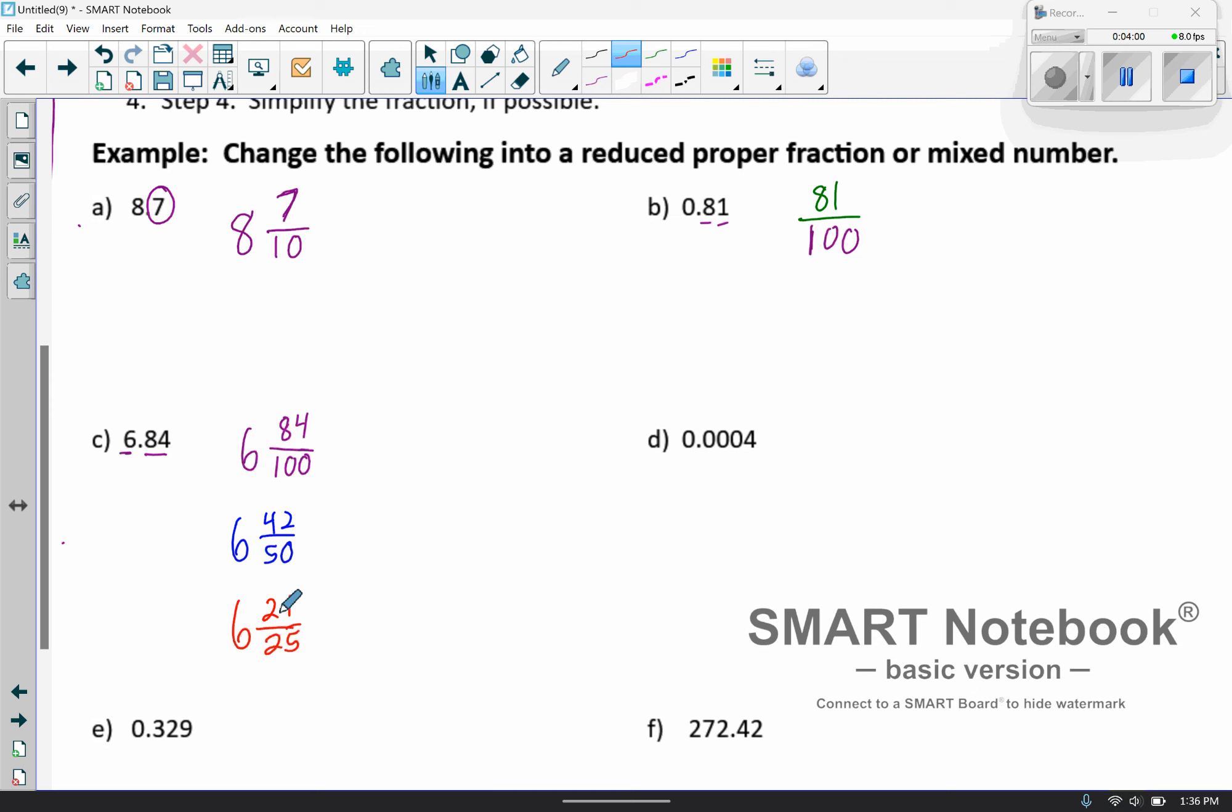So then we're going to have 6 and 21 over 25. And I do not believe they have any common factors after that. So you can try, but I don't see any common factors. And there we go. And if you wanted to reduce it all at once, if you noticed that they both had a factor of 4, that would be fine. But for me, I like to kind of take it in smaller, bite-sized pieces.